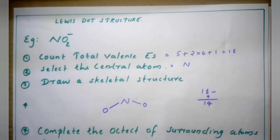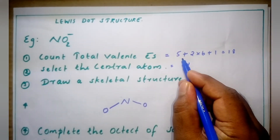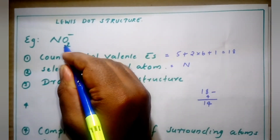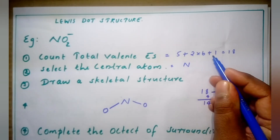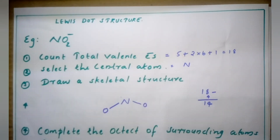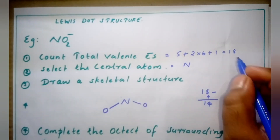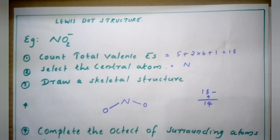A negative charge means one extra electron — we know that a positive charge means one electron less and a negative charge means one extra electron. So five valence electrons from nitrogen, each oxygen having six valence electrons, so two into six, plus one from the minus charge: totally 18 is the total valence electron count.